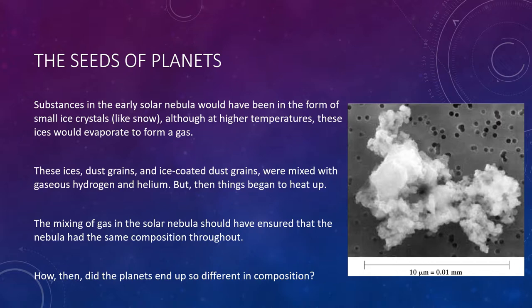Other substances in the early solar nebula would have been in the form of small ice crystals, although at higher temperatures these ices would evaporate and form a gas. Together, these solids—referred to as ices, dust grains, and ice-coated dust grains—were mixed with gaseous hydrogen and helium.